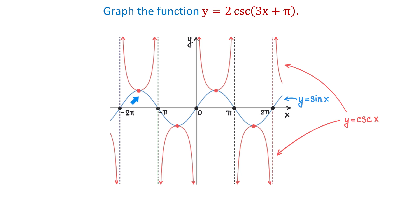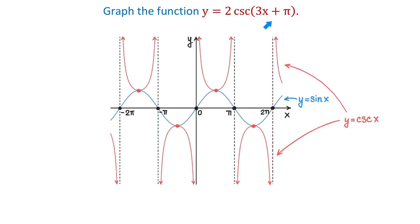Also, the maximum points of the sine function correspond to the minimum points of this top portion of the cosecant function, and the minimum points of the sine function correspond to the maximum points of this bottom portion of the cosecant function. So an easy technique for graphing this cosecant function is to first graph the sine function y equals 2 sine of 3x plus pi.